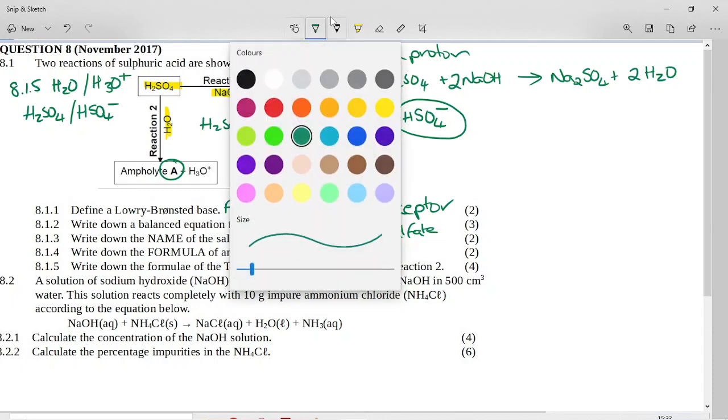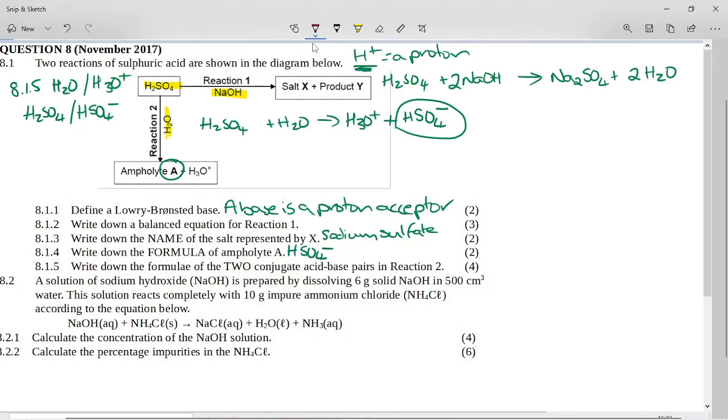Now it says to you, a solution of sodium hydroxide is prepared by dissolving six grams of solid sodium hydroxide in 500 cubic centimeters of water. This solution reacts completely with 10 grams of impure ammonium chloride according to the equation below. So in every chemistry reaction that you do the calculations for, you are always given something to work out. And the first part is always easy. Can you see this part is for four marks?